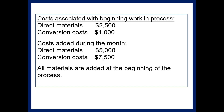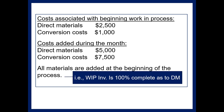That last statement tells us that work in process inventory is 100% complete as to materials. If you see this statement in a problem, that is what you can assume. It's very common to add materials at the beginning and then work on the units, adding labor and overhead continuously.